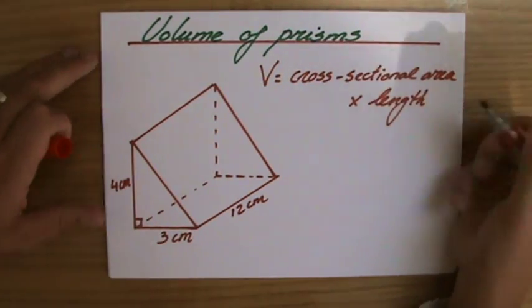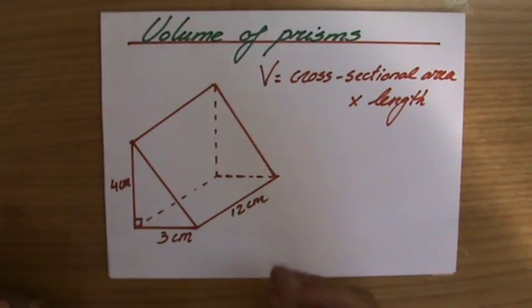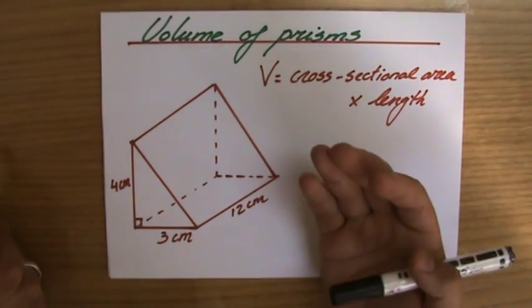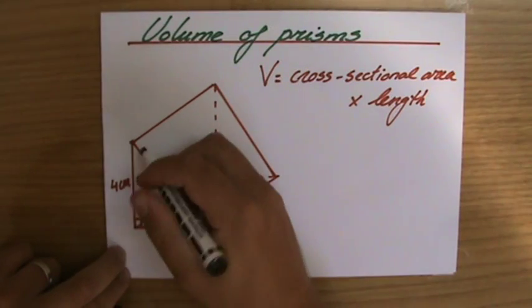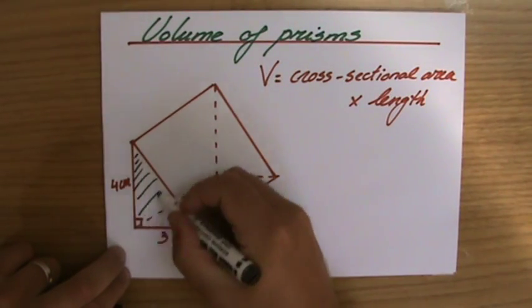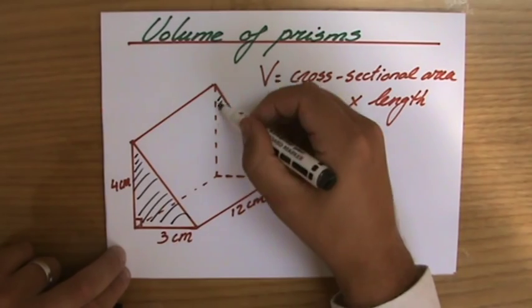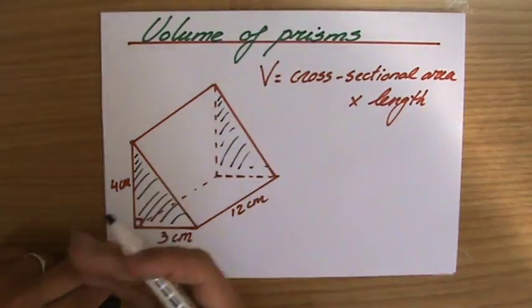Now with the cross sectional area, what do I mean with that? Well, as you know, a prism has two faces which are identical and parallel. And hopefully you see now already that I have this triangle and I have the same triangle there in the back here. We actually can't see it, but it's there.